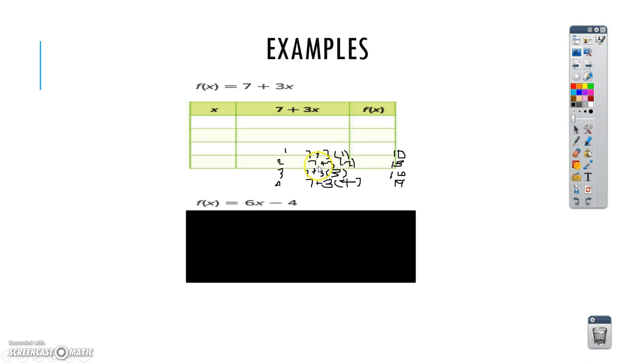But for the second problem, it's 7 plus 3 times 2. 3 times 2 is 6 plus 7, which is 13. And for the third problem, it's 3 times 3 is 9 plus 7, which is 16. But the fourth problem, it's 3 times 4 plus 7 equals 19.